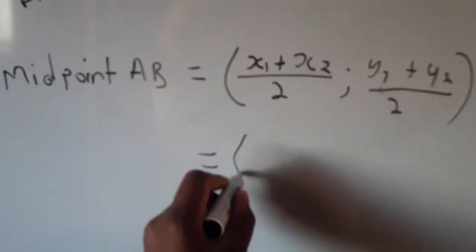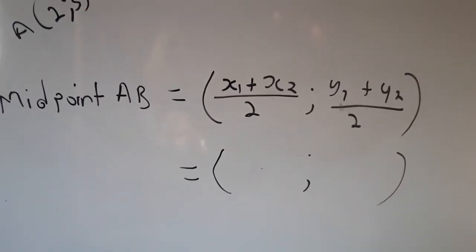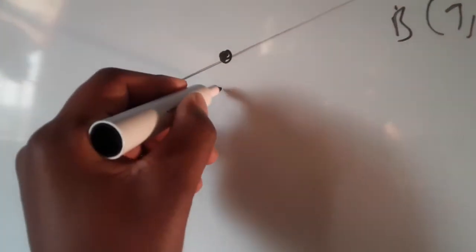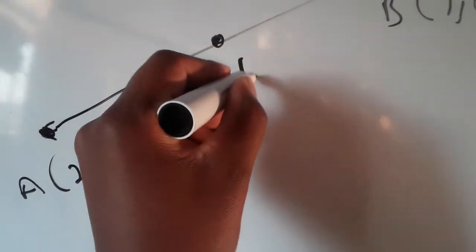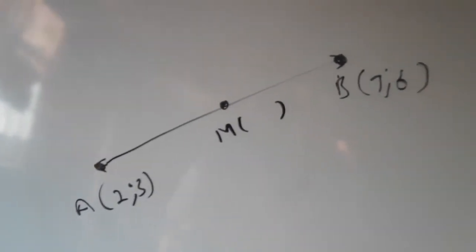Then we substitute the values. This is going to give us our coordinates of the midpoint. Let's call these coordinates M - we're looking for coordinates M, the midpoint of this line.